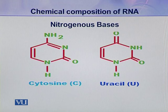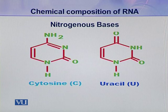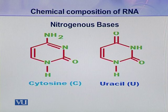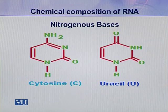The pyrimidine bases present in RNA are cytosine and uracil. Here you can see a difference: in case of DNA, uracil is not present — instead, thymine was present in the DNA molecule. But in RNA, instead of thymine, uracil is present. So overall, there are five types of nitrogenous bases: adenine, guanine, cytosine, thymine, and uracil. Thymine is only present in DNA molecules while uracil is only present in RNA molecules.